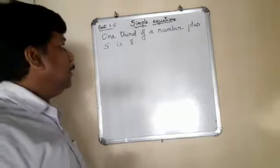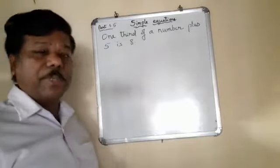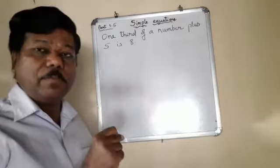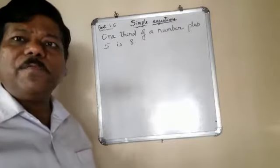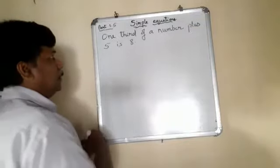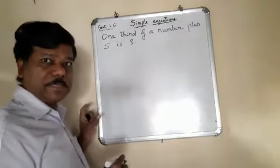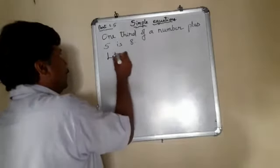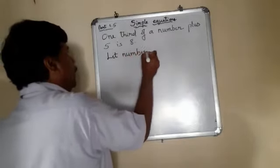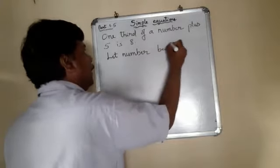So let us try this question. So one third of a number plus 5 is 8. So one third of a number. Let the number be x here. We have not been given what the number is, right? So let us assume that it is x. Let number be x.